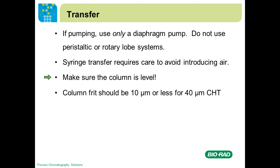Make sure the column is level — this is particularly important for packing CHT, and I'll come back to why shortly. If you are packing 40 micron CHT, the column frit should be 10 microns or less. CHT has a nominal particle size of 40 microns, but some particles are smaller. If you use a 20 or 22 micron frit — which is typical for most shipped columns — those small particles can plug the bottom of the column and lead to flow irregularities.